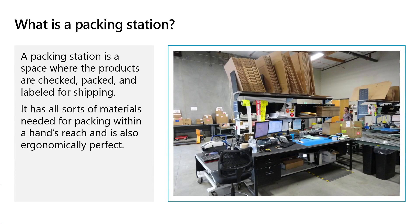These activities are performed in an area in the warehouse called the packing station. As per the warehouse design, all the steps could be performed in the packing area, or items could be packed in the packing area while other activities — like getting the package weight, printing the labels, and shipping carrier integration — could be performed in another separate area called the manifesting station.